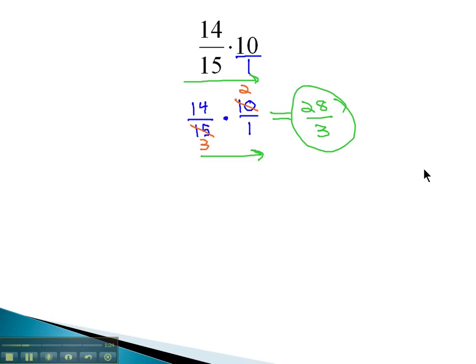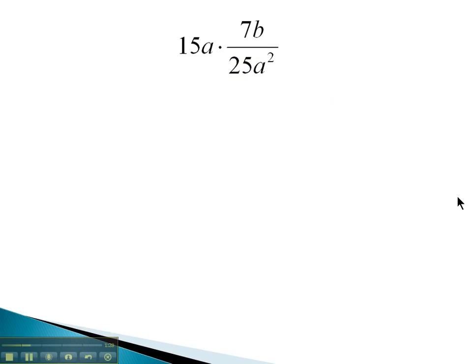Let's try one more example where we multiply with a whole number. Here, we have 15a times 7b over 25a squared. The 15a is not a fraction, so we're going to put it over 1 to make it a fraction. We now have 15a over 1 times 7b over 25a squared.